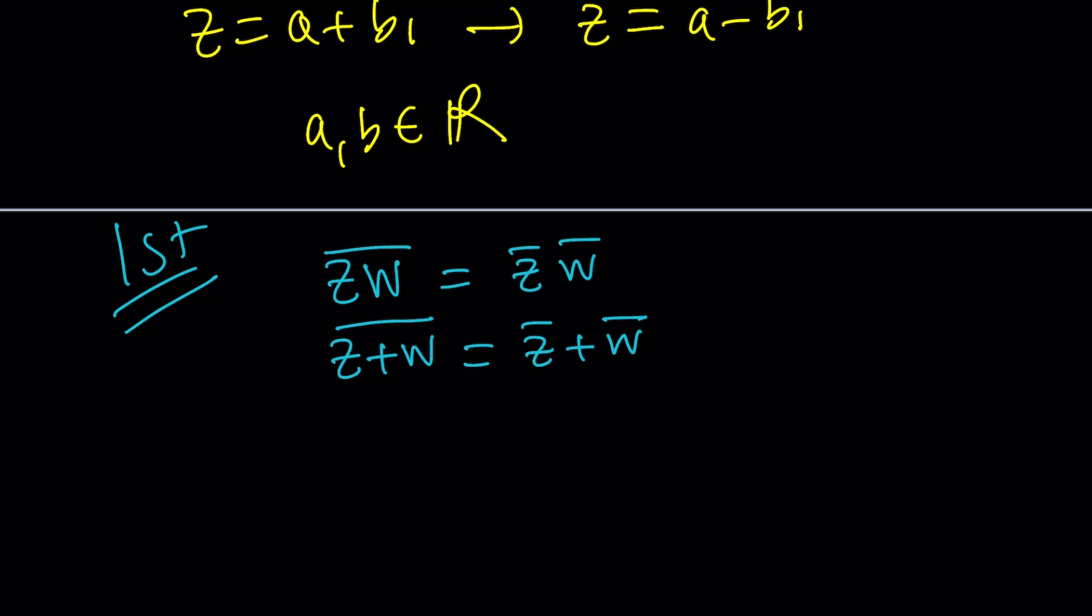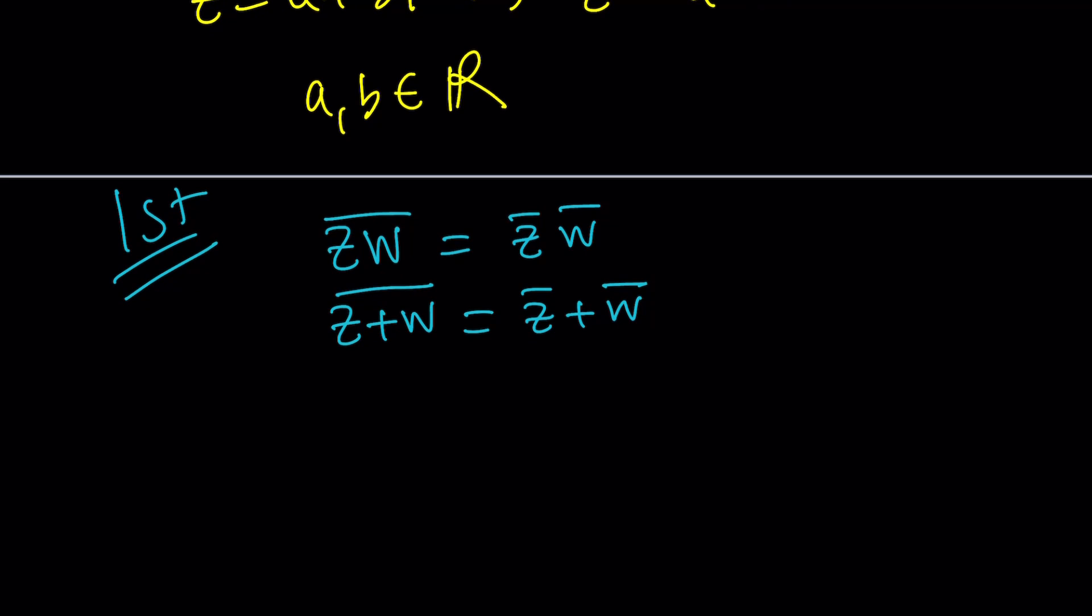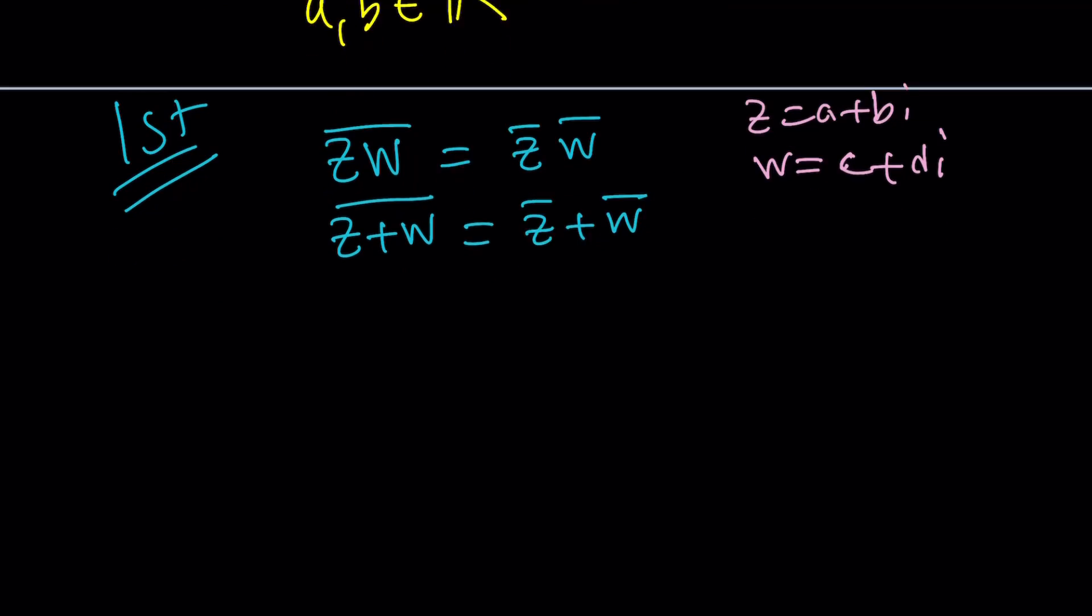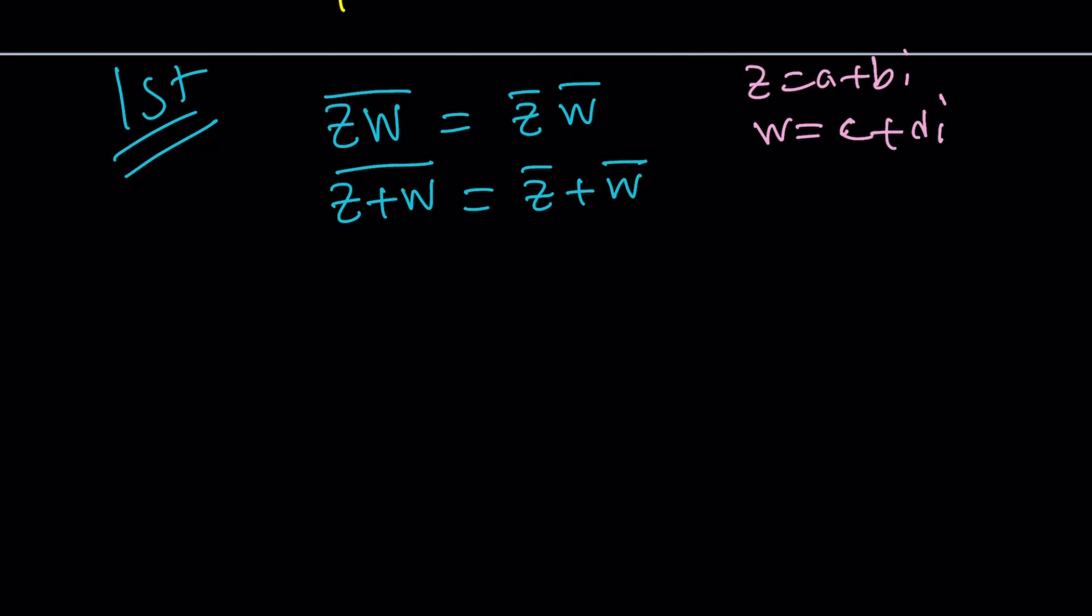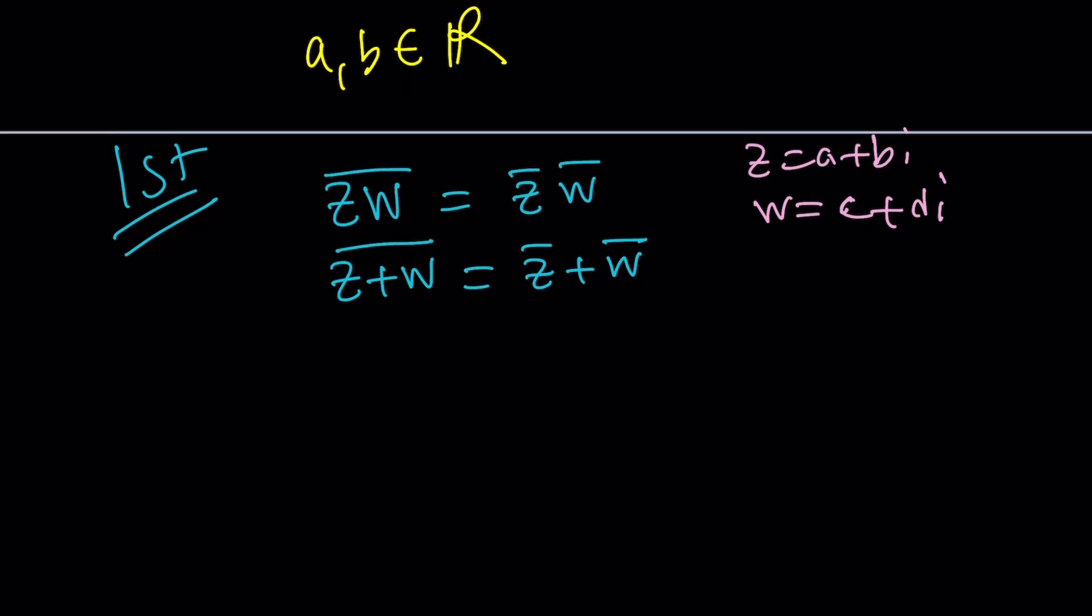So if you negate both imaginary parts, that means you're negating the sum of the imaginary parts. I hope that makes sense. That sounds confusing. Anyways, you can prove these easily by setting z equals a plus bi and w equals c plus di. Make sense? The proof is left to the reader. Something that you would hate, right?